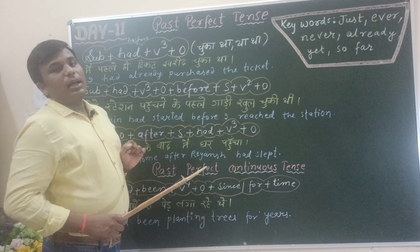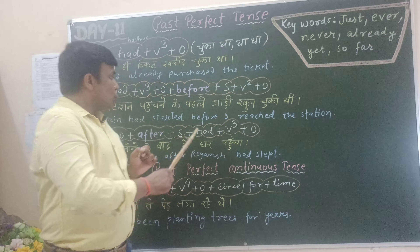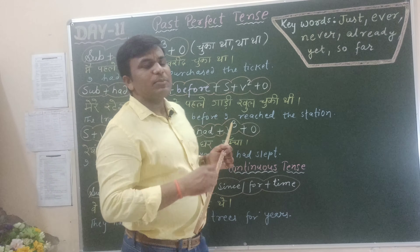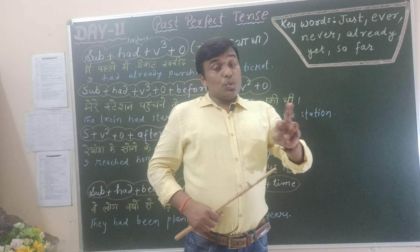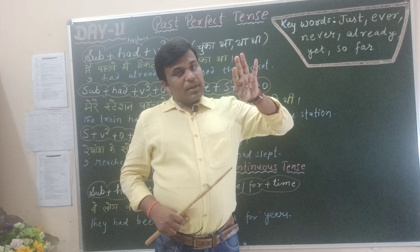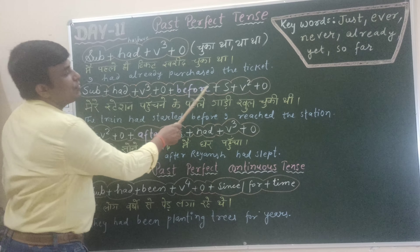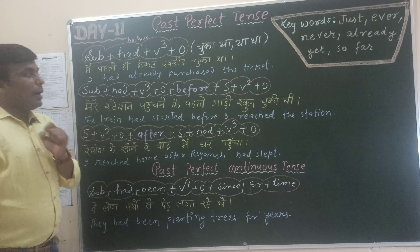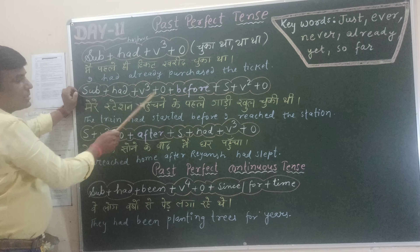One thing is common in both before and after sentences. I repeat: the action which takes place first — in both cases — will be made using past perfect tense. For example: उसके आम खरीदने के पहले मैं सेब खरीद चुका था — I had bought an apple before he bought a mango. Whichever action takes place first will be made according to past perfect tense. That is all about past perfect tense.